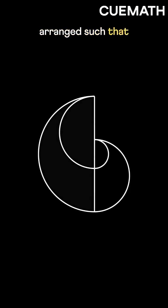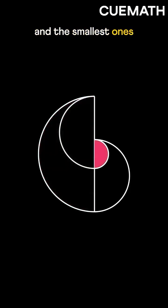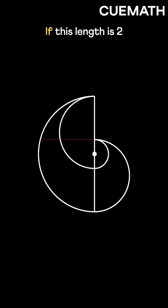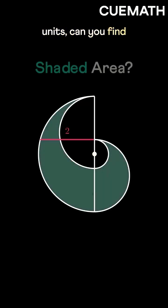Four semicircles are arranged such that the largest and the smallest ones share the same center. If this length is two units, can you find the shaded area?